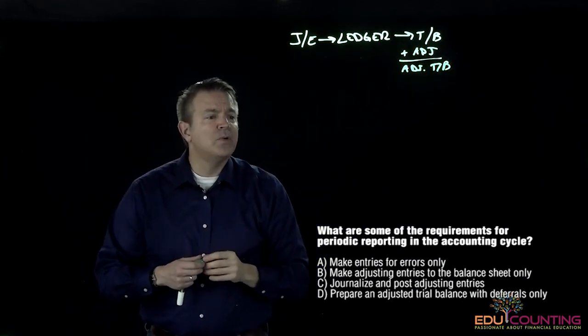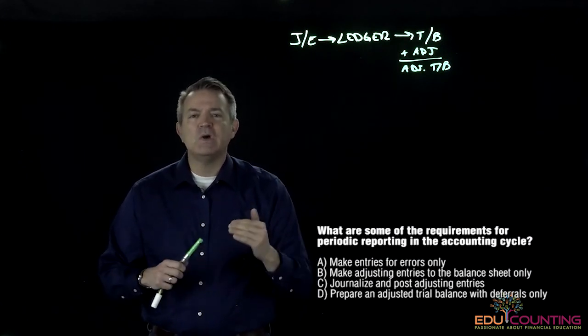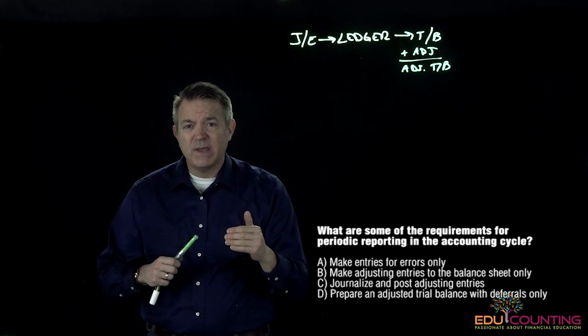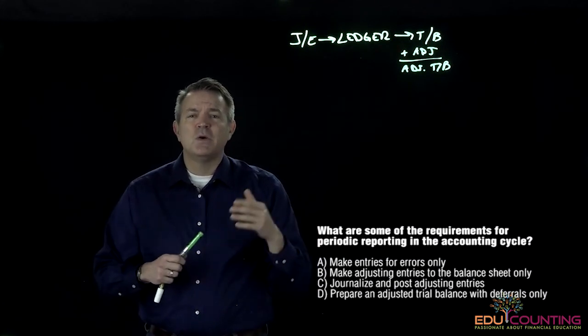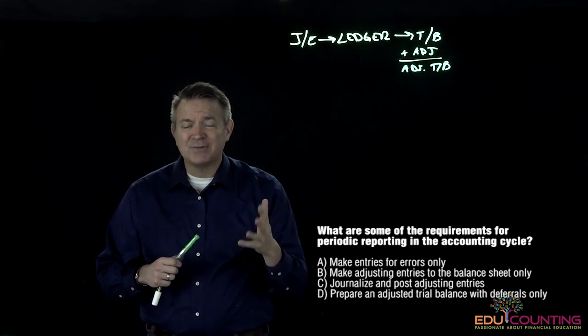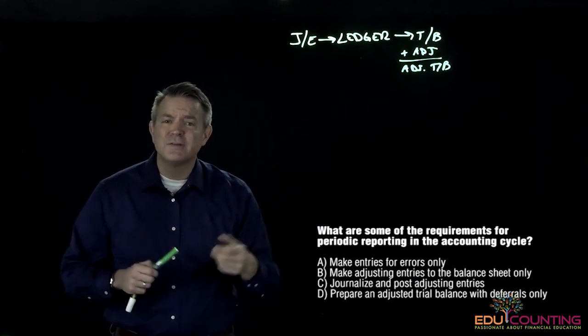Here we go. In the periodic reporting process, do we make entries for errors only? No, we know that there are some requirements that we have to do for the entries in order to post to the trial balance. We know that they're not only error-related, they're required, they're normal. We see them and they're accruals and deferrals.